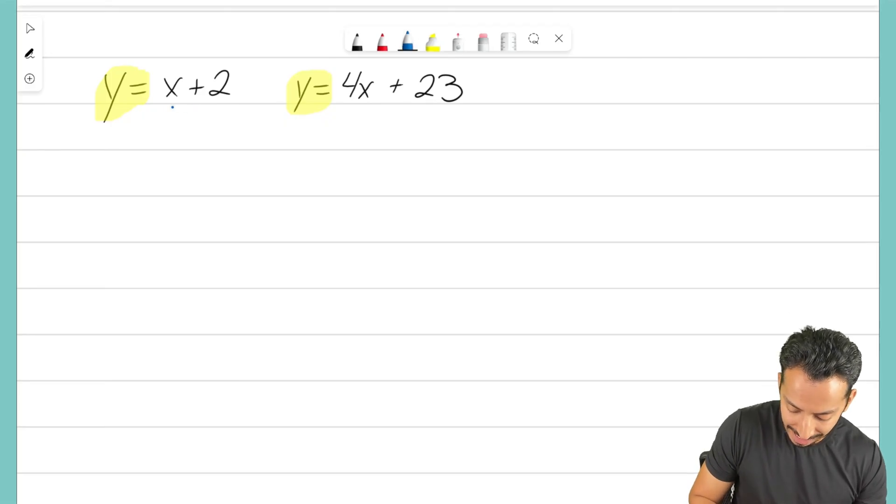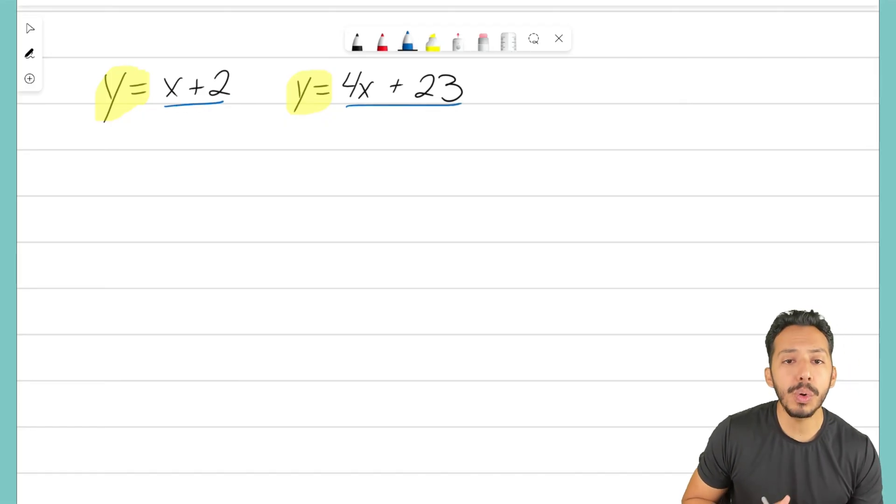That means these two pieces at the end, x plus 2 and 4x plus 23, they must be equal to each other. Because if they're both equal to y, then they have to be equal to each other.